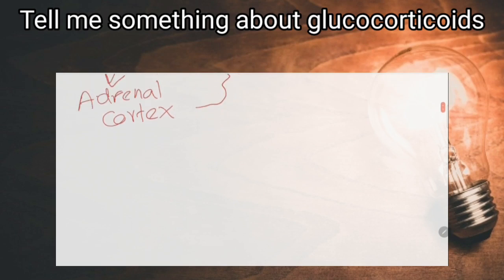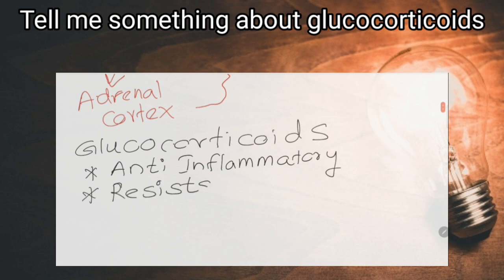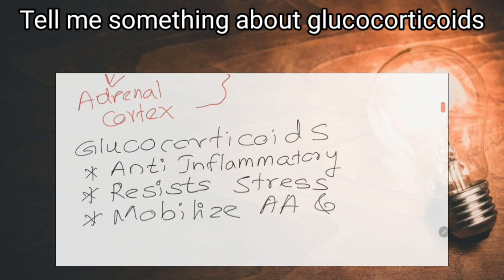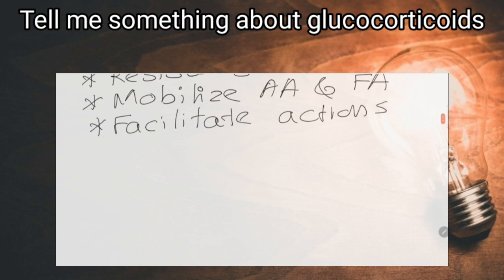Tell me something about glucocorticoids and some examples. Glucocorticoids are steroid hormones synthesized in the adrenal cortex, such as cortisol and corticosterone. They have anti-inflammatory effects, so they are used as drugs such as cortisol, prednisone, methylprednisolone, and dexamethasone. They increase in stressful conditions and resist the stress.